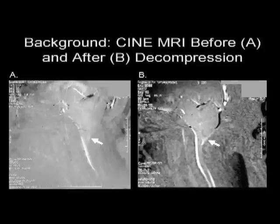This is just an example of a sagittal MRI of an individual with Chiari before, here in A, and after decompressive surgery. You can see resumption of CSF flow posterior to the cord here following decompression. We did do cine MRIs on our subjects in one of the studies I'm going to be presenting to you.